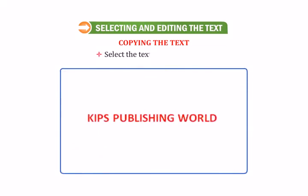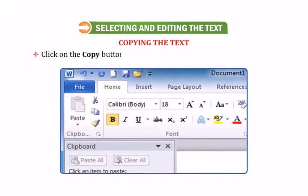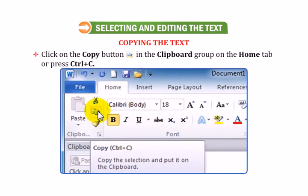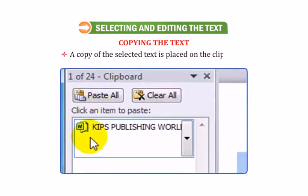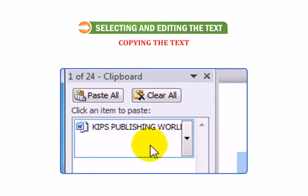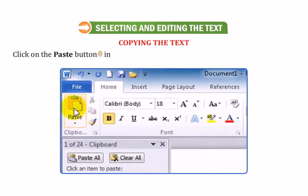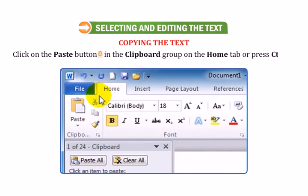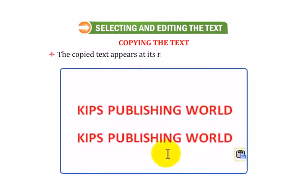Now let us know how to copy the text. Click on the copy button in the clipboard group on the Home tab or press Ctrl plus C. A copy of the selected text is placed on the clipboard. Position the cursor at the desired place. Click on the paste button in the clipboard group on the Home tab or press Ctrl plus V. The copy text appears at its new location in the document.